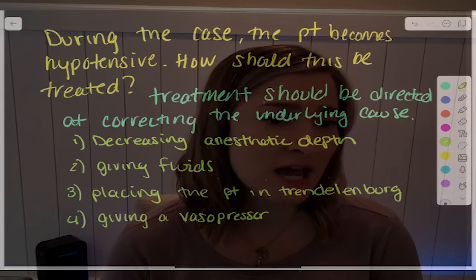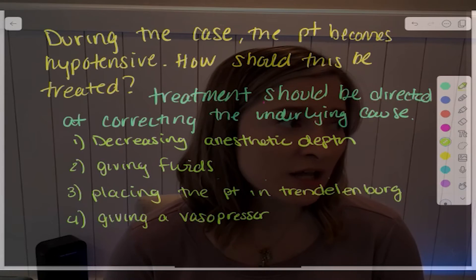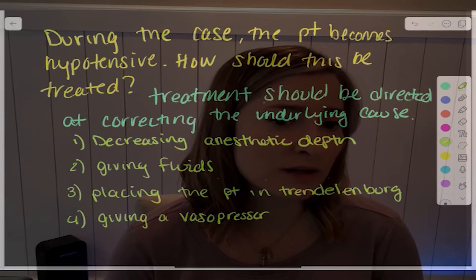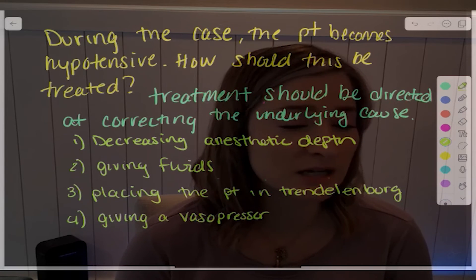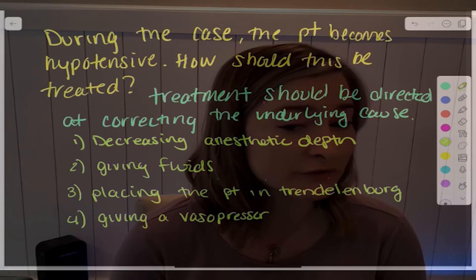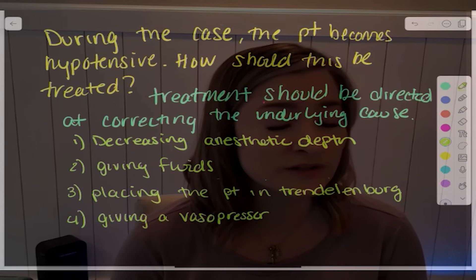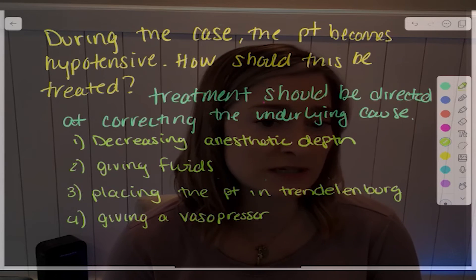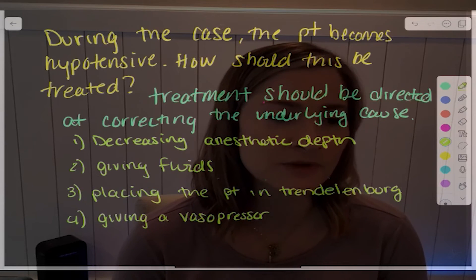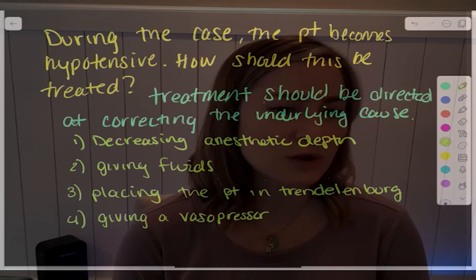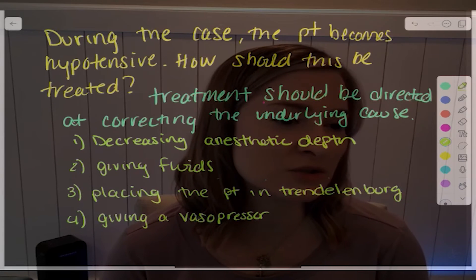Sometimes the surgeon is actively causing the hypotension — for example, by putting pressure on the IVC. When the surgeon's causing the hypotension, maybe you can tolerate it, or communicate with the surgeon if it becomes intolerable. If it's a critical part of the case that needs to happen, you'll have to support the patient as best as possible. I don't want you to jump straight to vasopressors — you really have to assess the situation, get a full picture, and then decide how to treat it.